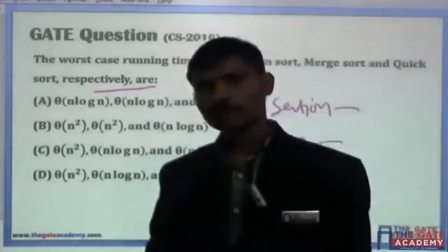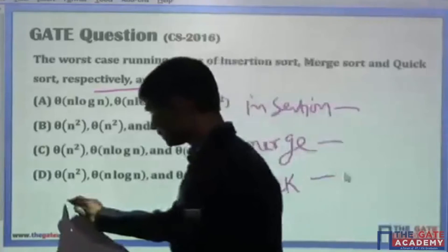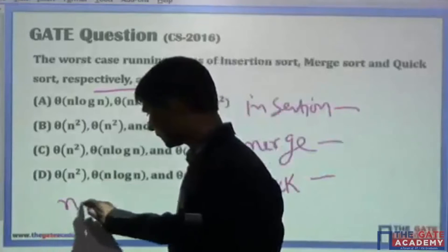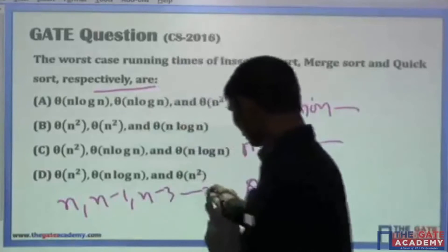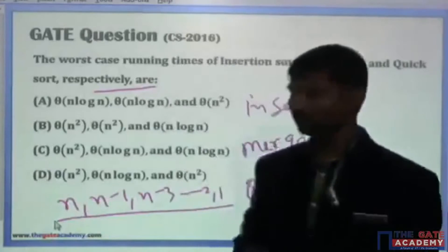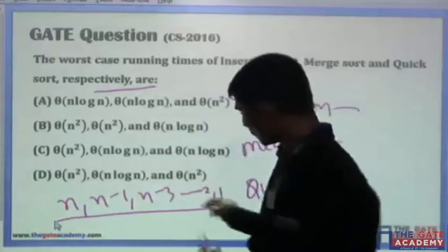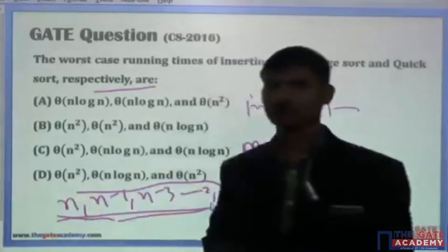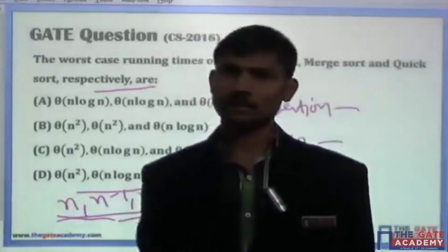For insertion sort, if the list is already in descending order — suppose the elements are like n, n-1, n-3, ..., 2, 1 — then we know that insertion sort will perform poorly on such inputs. In this case, the time complexity of insertion sort will be O(n²).